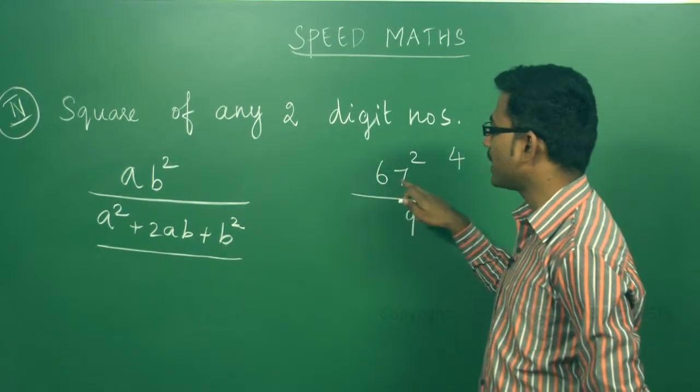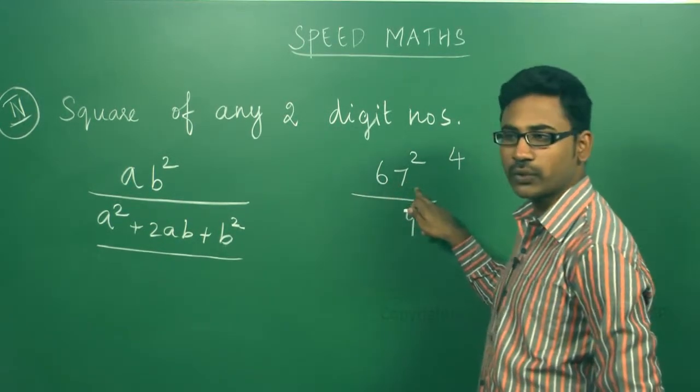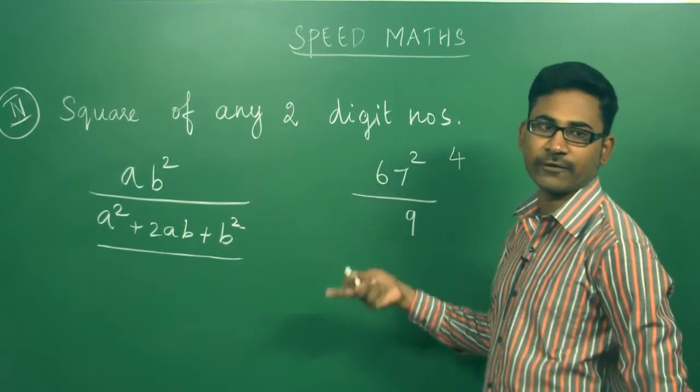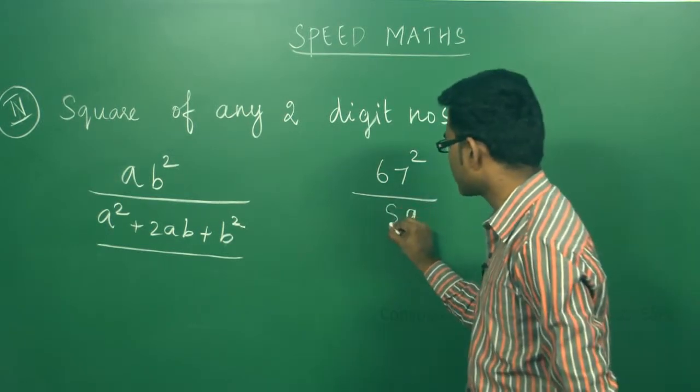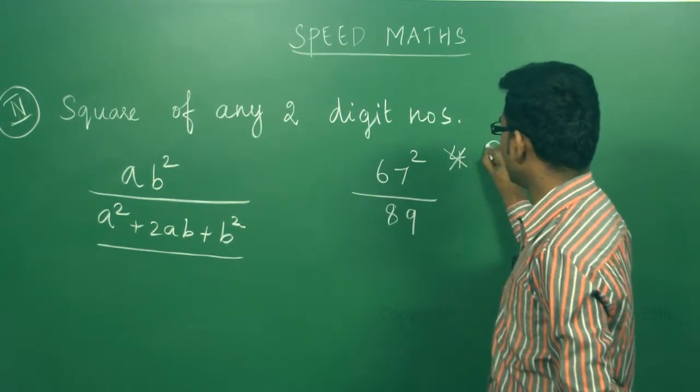Second step, I have to multiply this 2 by 2. 6 into 7 is 42. 42 into 2 is 84. 84 plus the carry 4 that is already there, so 84 plus 4 is 88. Now, carry is 8.